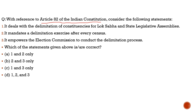The population growth was disproportional — southern states controlled their populations well, while northern states had a higher replacement rate. This impacted representation, since representation is directly proportional to population. Northern states would get more representation than southern states, which the southern states opposed because they felt they were being punished for doing well in population control rather than being rewarded.